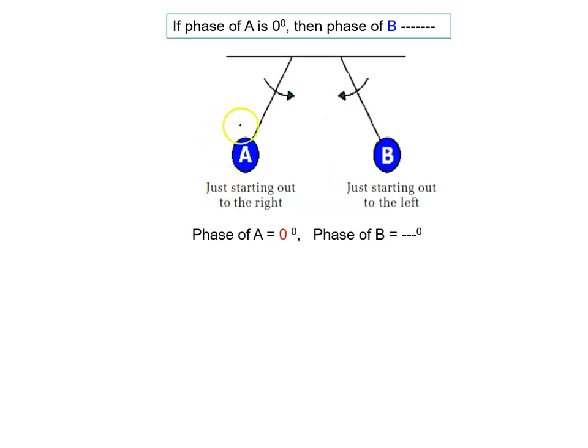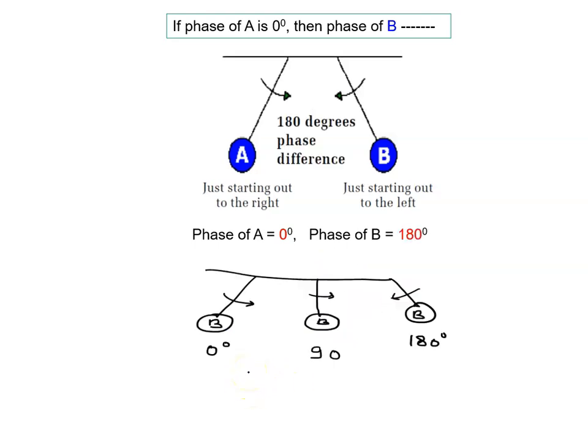Yahan pe dekho. Agar A ka phase 0 hai, B pe aho. Yani B particle pendulum aisa hota hua to phase getta hoa to 0. Phir yeh seedha hoa to phase getta hoa 90 degree. Phir extreme pe da ki palet raha hoa phase getta hoa 180 degree. So what is the phase of B? 180 degree.